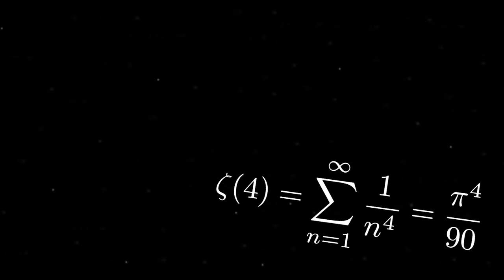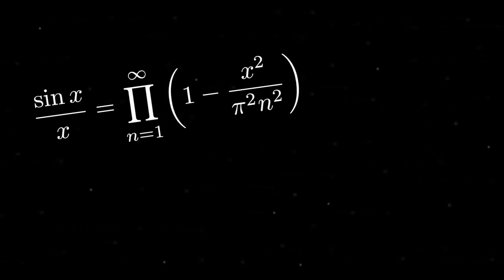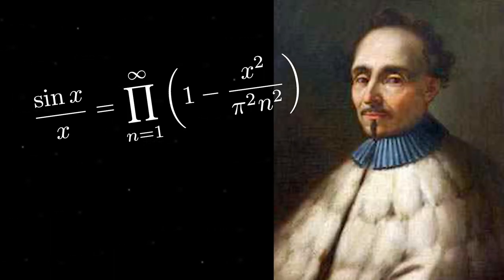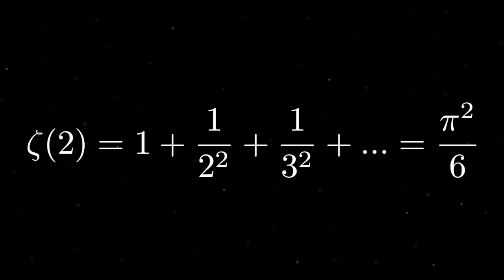Euler went on to solve the Basel problem, a problem posed by Pietro Mengoli in 1650 that involves the infinite sum of the reciprocals of the squares, and was named the Basel problem after Euler's hometown after he miraculously showed that it had a closed form expression of pi squared over 6.